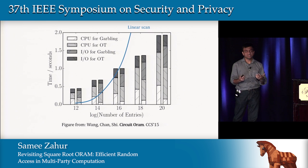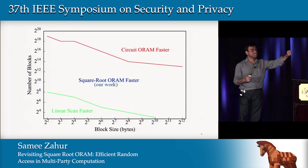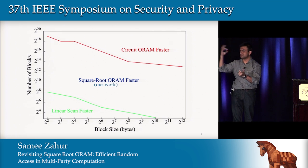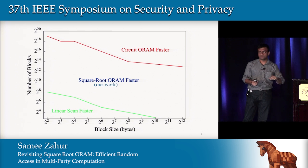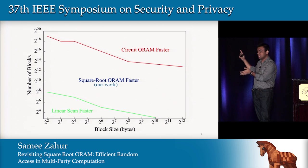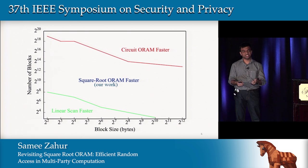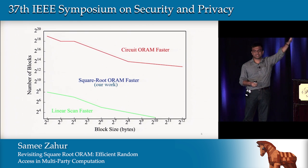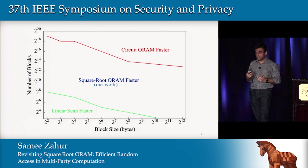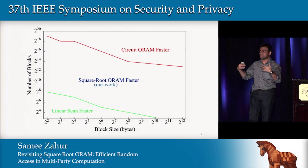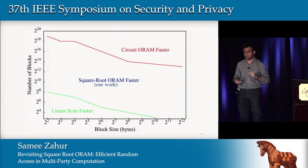To foreshadow our results: this graph shows the combination of parameters for which each construction is optimal. The x-axis is the size of each element and the y-axis is the number of elements. For a large combination of parameters, our approach — even though it's asymptotically poorer — actually wins, and this is just access time without considering startup cost. For smaller data sizes, linear scan is still faster; for very large sizes you still want Circuit ORAM, but 'large' here means something on the order of several days or weeks of computation.